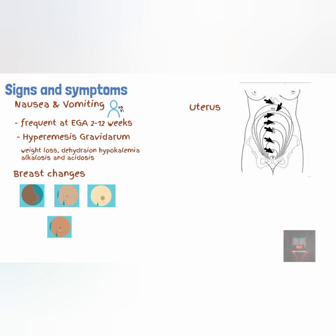Enlargement of the uterus is mainly due to hypertrophy and hyperplasia of the myometrial smooth muscles. Early in pregnancy, this process is primarily stimulated by estrogen. As pregnancy progresses, increase in uterine size is usually due to mechanical distension.